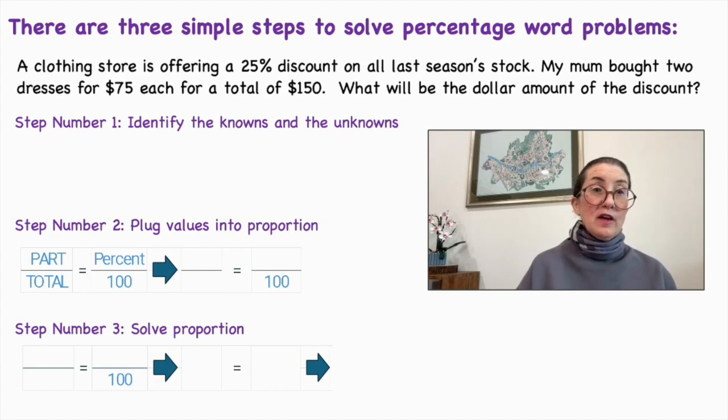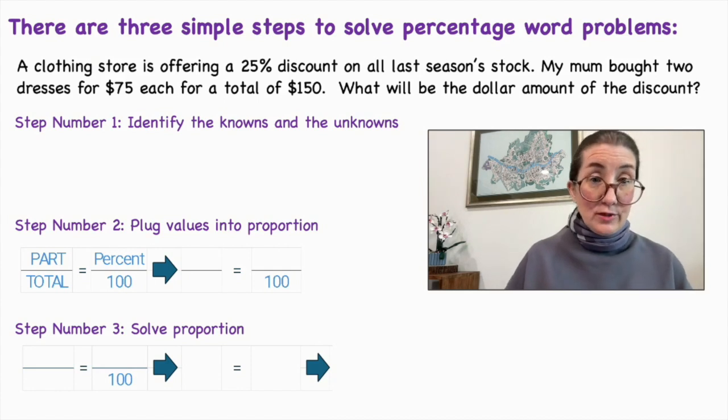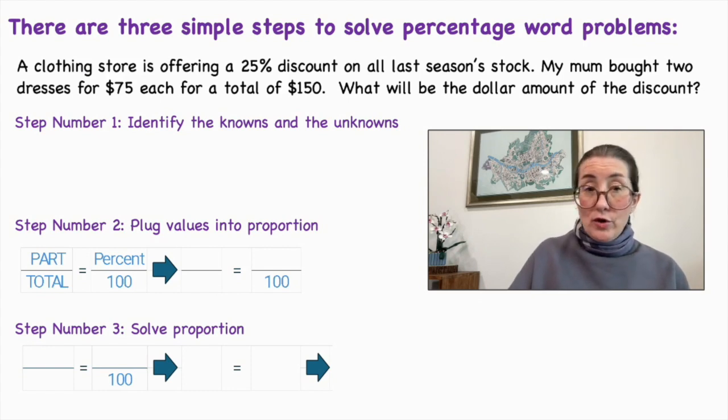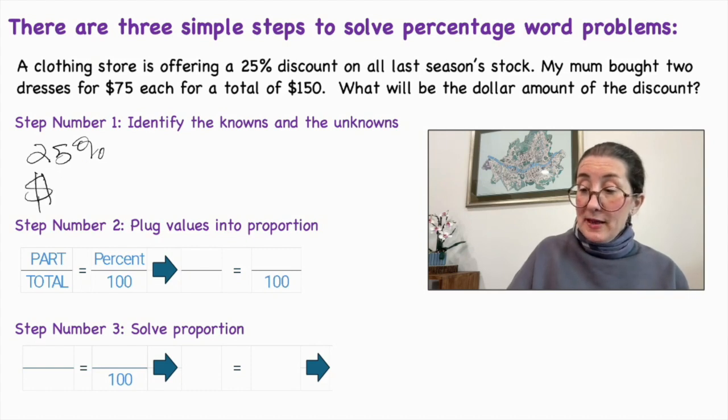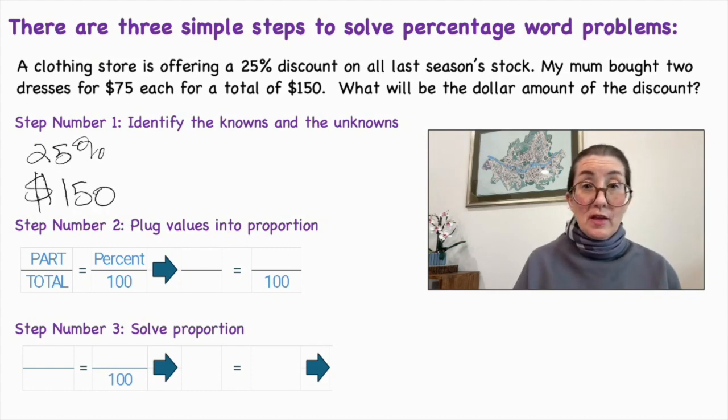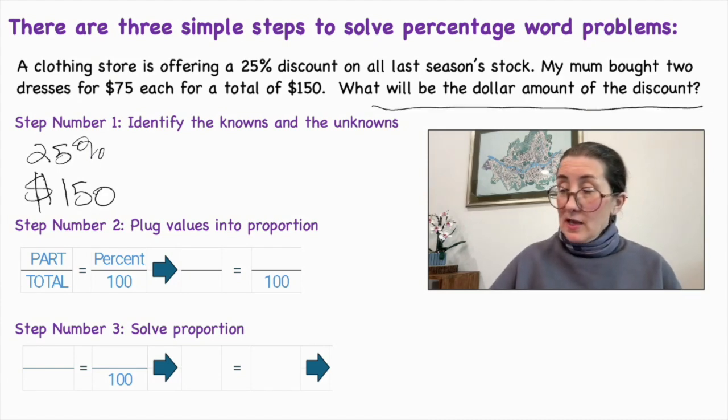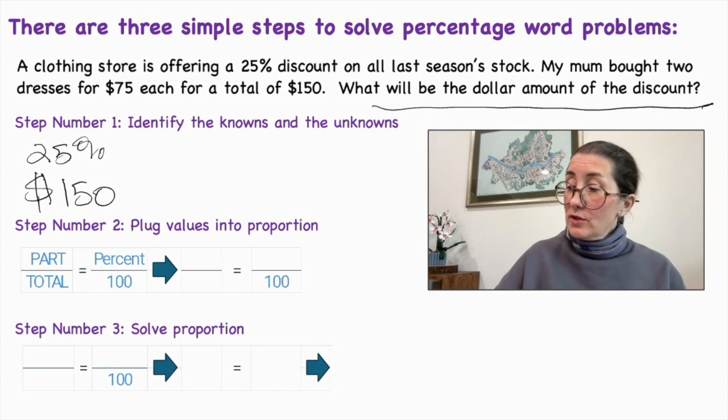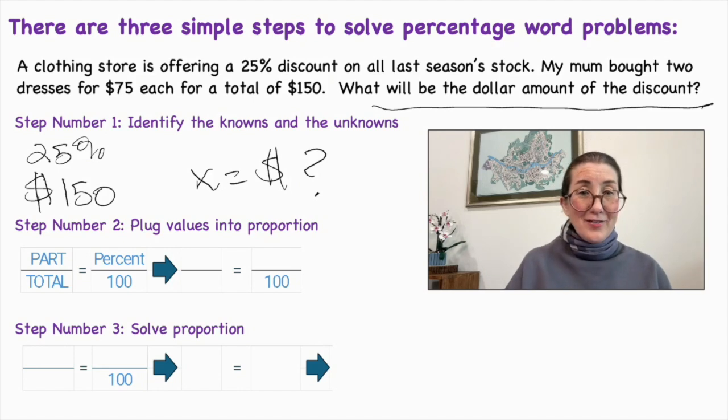All right, let's look at our sample question. A clothing store is offering a 25% discount on all last season stock. My mom bought two dresses for $75 each for a total of $150. What will be the dollar amount of the discount? So step number one, identify the knowns and unknowns. The knowns are a 25% discount. This is the unknown, the dollar amount of the discount. So that's X equals the dollar amount of our discount.